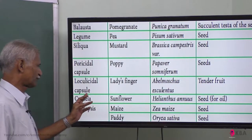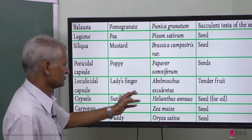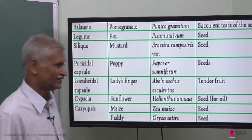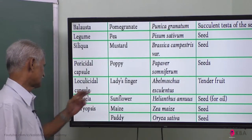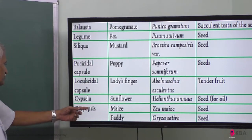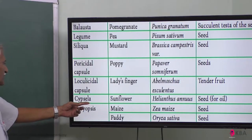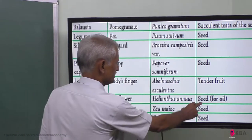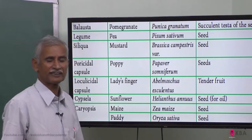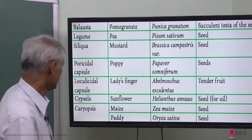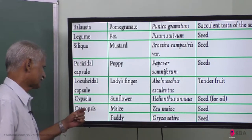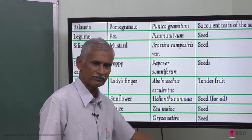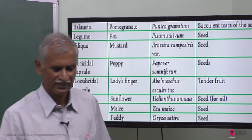For loculicidal capsule — ladies' finger — it is a tender fruit but we use it as a vegetable. For cypsela — sunflower — the seed is edible and can be used for preparation of sunflower oil. For caryopsis — maize and paddy — the seed is edible.